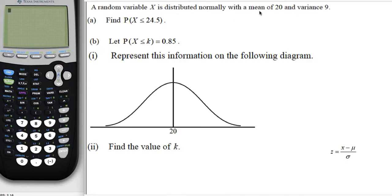The random variable X is distributed normally with a mean of 20 and a variance of 9. Find the probability that X is less than or equal to 24.5.